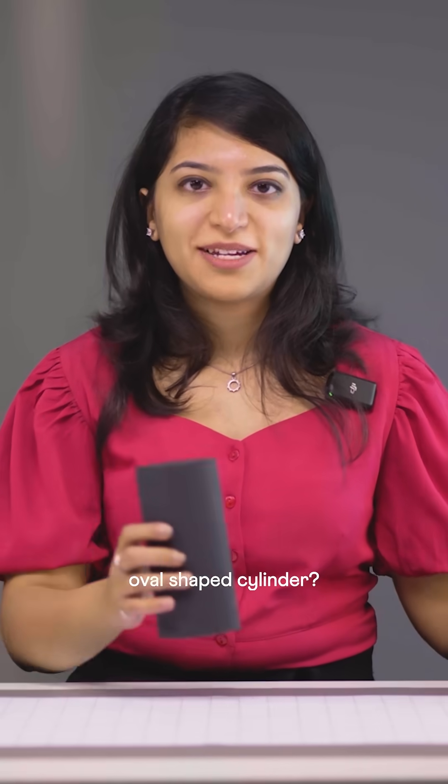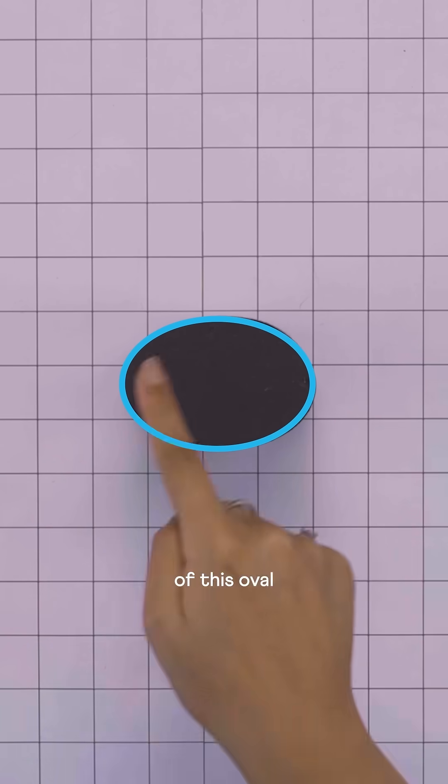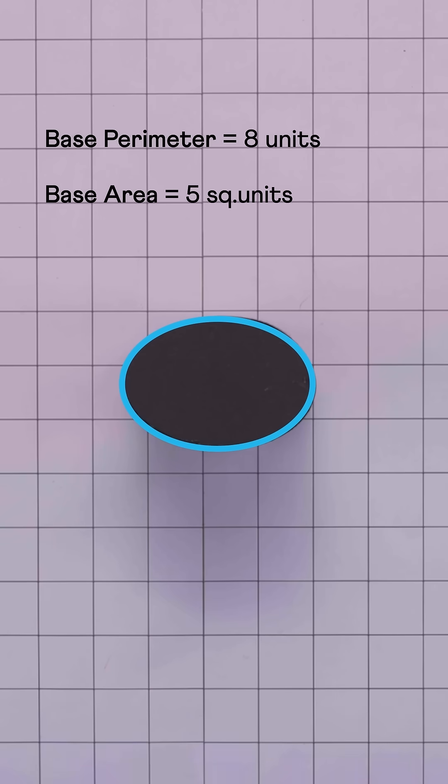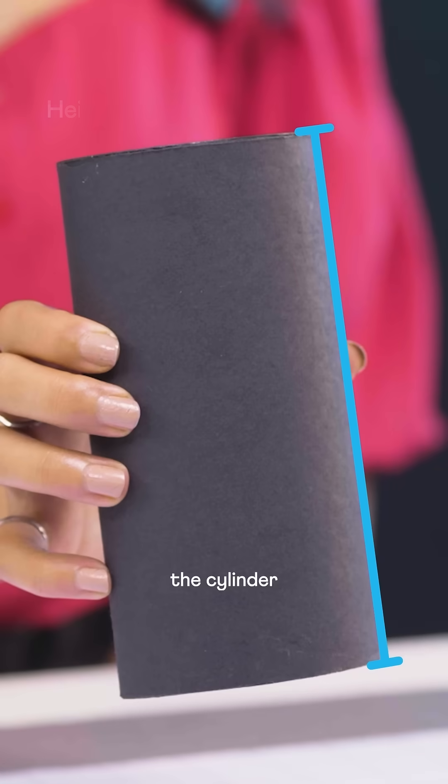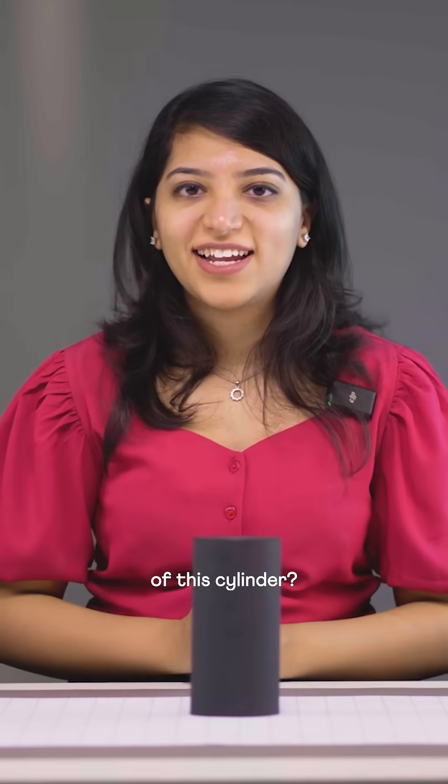Now how about this oval shaped cylinder? The perimeter of this oval shape is 8 units, area is 5 square units, and the height of this cylinder is 6 units. Can you find the surface area of this cylinder?